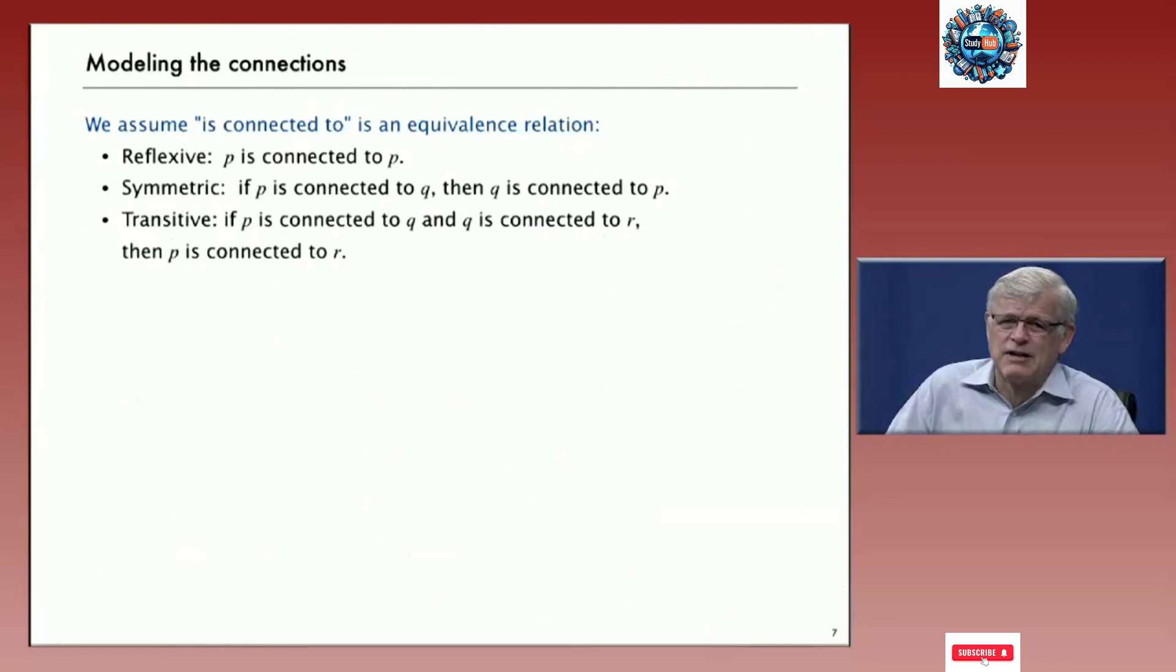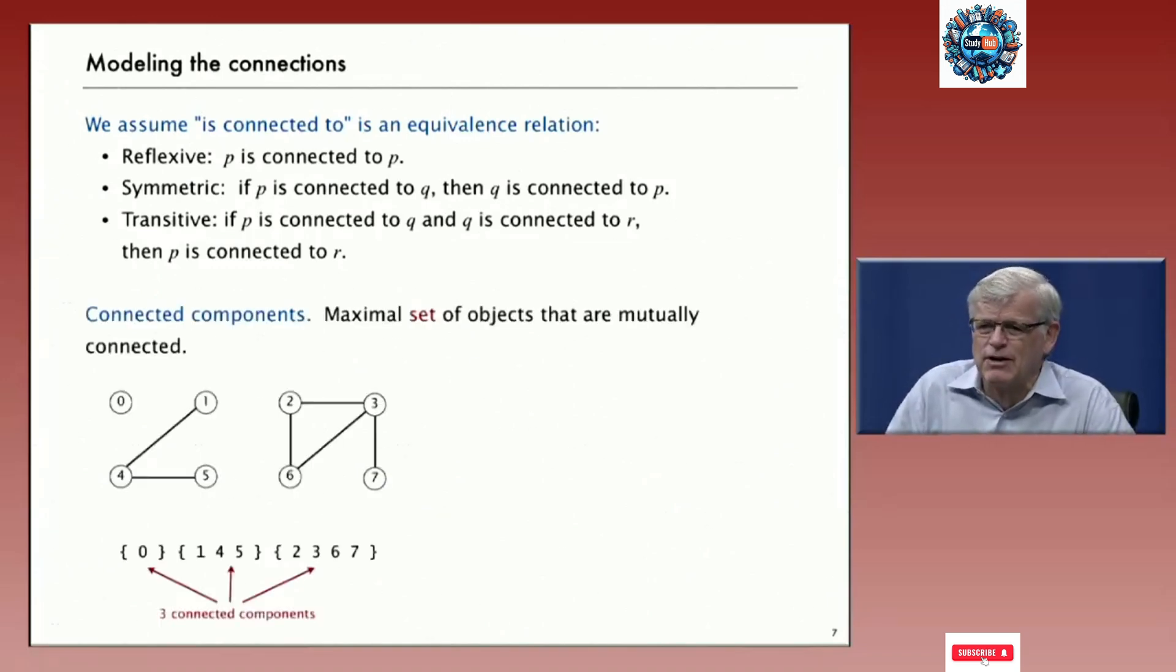Now, the connections, we need a few abstract properties that these connections have to satisfy and they're all quite natural and intuitive. So we assume that is connected to is an equivalence relation. That is, every object's connected to itself. It's symmetric. If P's connected to Q, then Q's connected to P. And it's transitive. If P's connected to Q and Q's connected to R, then P's connected to R. Now, these properties are very intuitive, but it's worthwhile to state them explicitly and make sure that our algorithms maintain them.